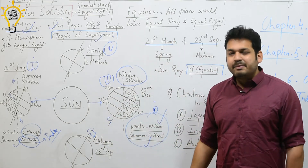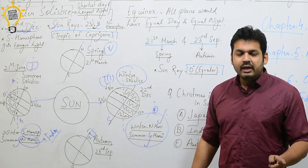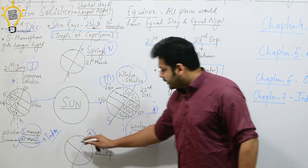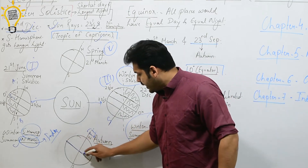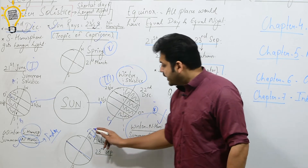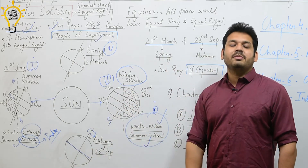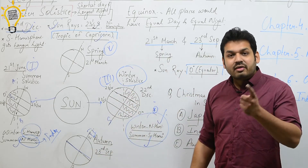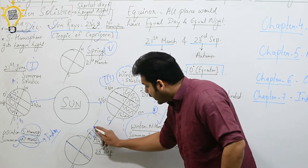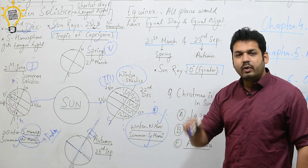When the sun is neither over the Tropic of Cancer nor the Tropic of Capricorn, but over the equator, we get equinox positions. The circle of illumination at these positions passes through the axis — the circle of illumination is aligned with the axis.